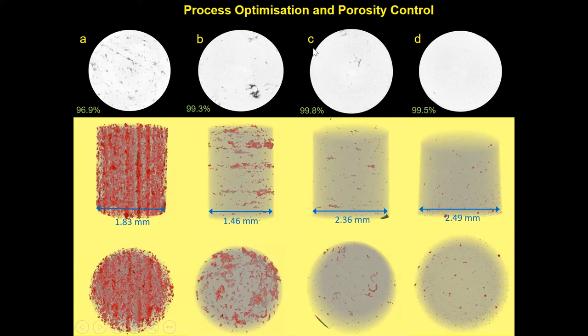With optimizing the processing parameters in sample C, we reach a very high density of 99.8%, but still we have very few lack of fusion pores inside the material. Importantly, sample C and sample D are produced at exactly the same energy density but with a few changes in processing parameters. Sample D has a density of 99.5% without any lack of fusion pores or irregular shaped pores. Most of the pores inside the material are spherical, which are different from these irregular shaped pores. Later on, I will show what would happen if we have these irregular shaped pores inside the material during the corrosion experiment.